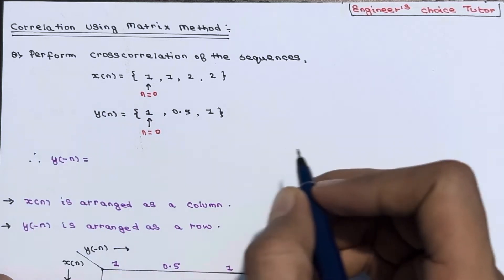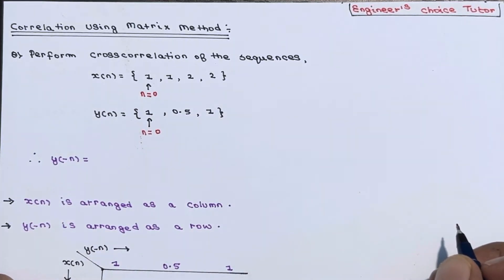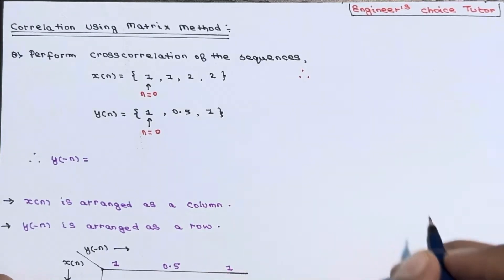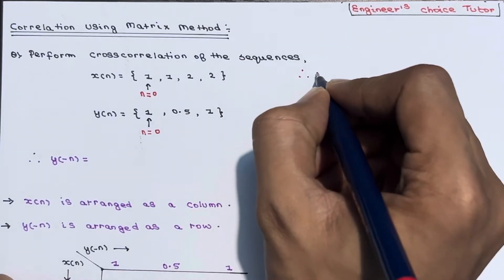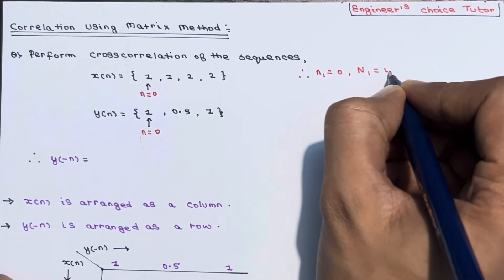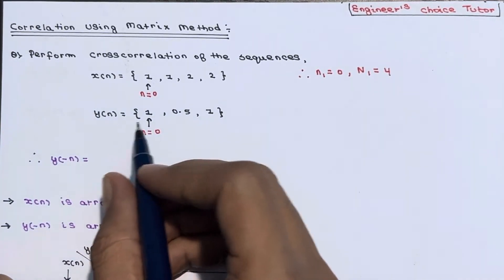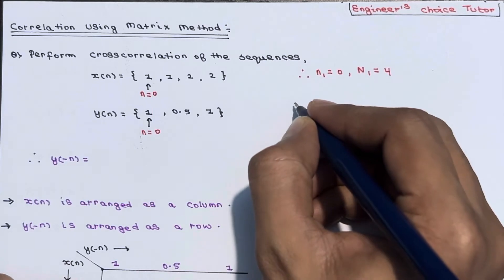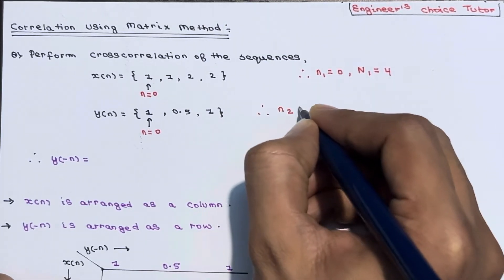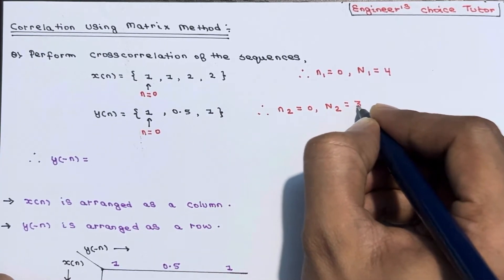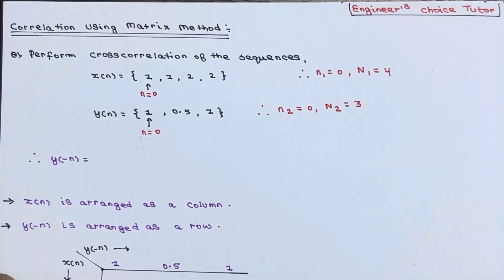For x(n), it starts at n=0 and has 4 samples, so n1=0 and capital N1=4. Similarly, y(n) starts at n=0 and has 3 samples, so n2=0 and capital N2=3. The total length is N1 + N2 - 1 = 5 is referenced here, and this will be used in our calculations.